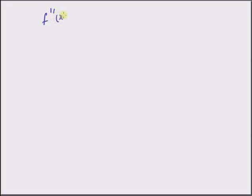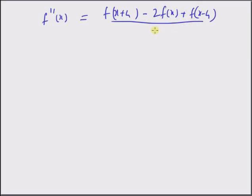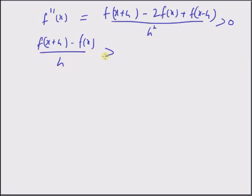Using the Taylor series expansion again, we can write an approximation of the second derivative as: f of x plus h minus 2 times f of x plus f of x minus h, divided by h squared. Since this is always greater than 0, rewriting this term we can see that f of x plus h minus f of x divided by h is greater than f of x minus f of x minus h divided by h. So the slope of the first line is greater than the slope of the second line — this is what it means for a function to be convex.